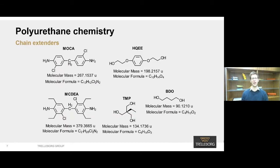Next we talk about chain extenders. The larger molecules are coupled with smaller molecules with much lower molecular weights — we call these chain extenders. These are normally amines or diols, as you can see by these examples here. These chain extenders dictate the final polymer's cross-link density, and their loading levels are tweaked to impact the final hardness and the ultimate mechanical properties. High molecular weight polyols and these low molecular weight chain extenders make up the polyol component to a PU system.